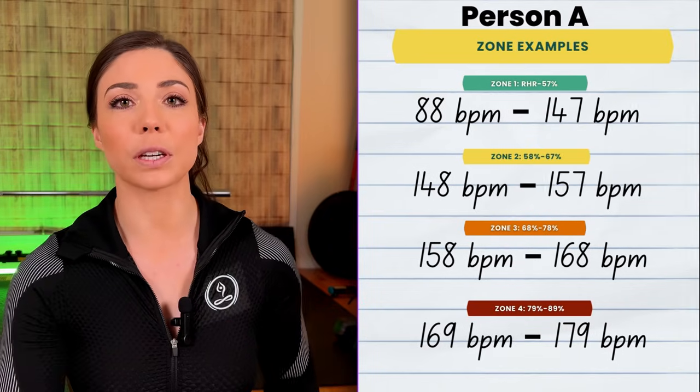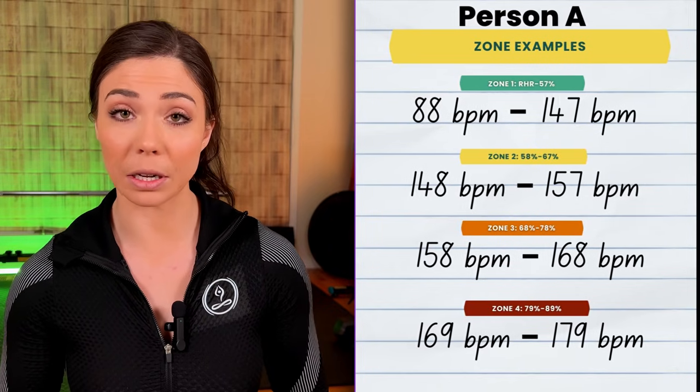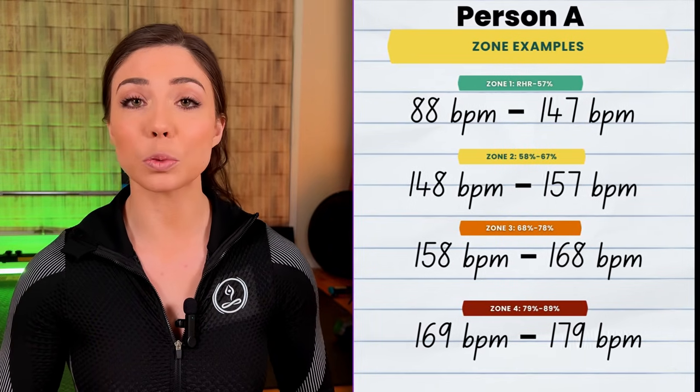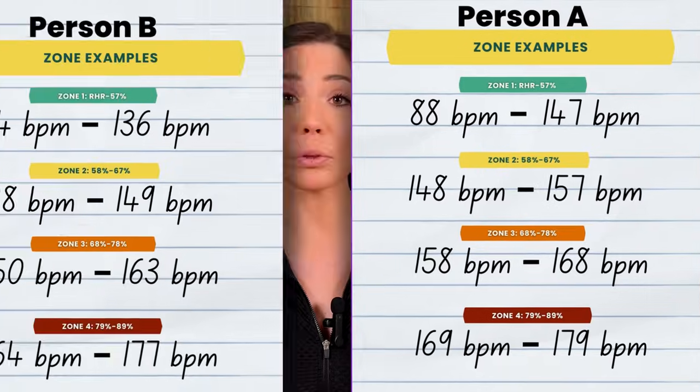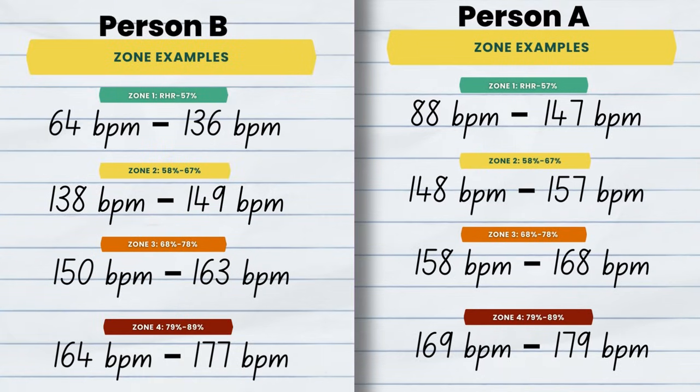I've calculated all the specific zones for person A and person B based on the percentages from my zone training video. If you look at the two sets of numbers for each of their zones, the numbers are completely different — and that's exactly what we want, because these are people with different lives, backgrounds, and activity levels. If we didn't use the Karvonen method or the heart rate reserve method, those zones would be exactly the same. Identical. That doesn't make sense.